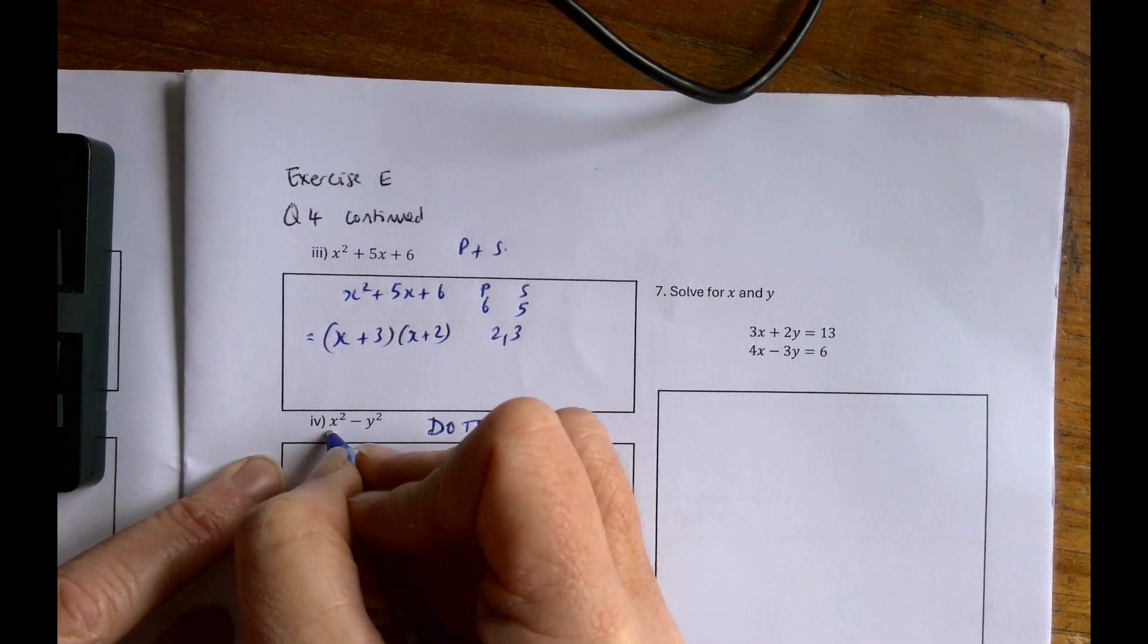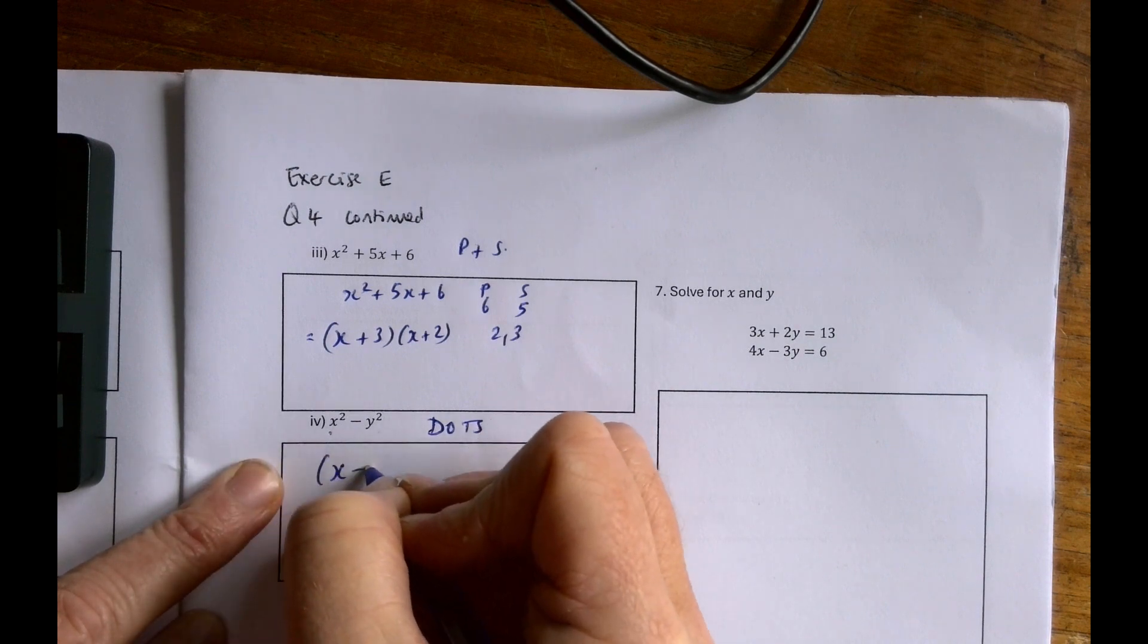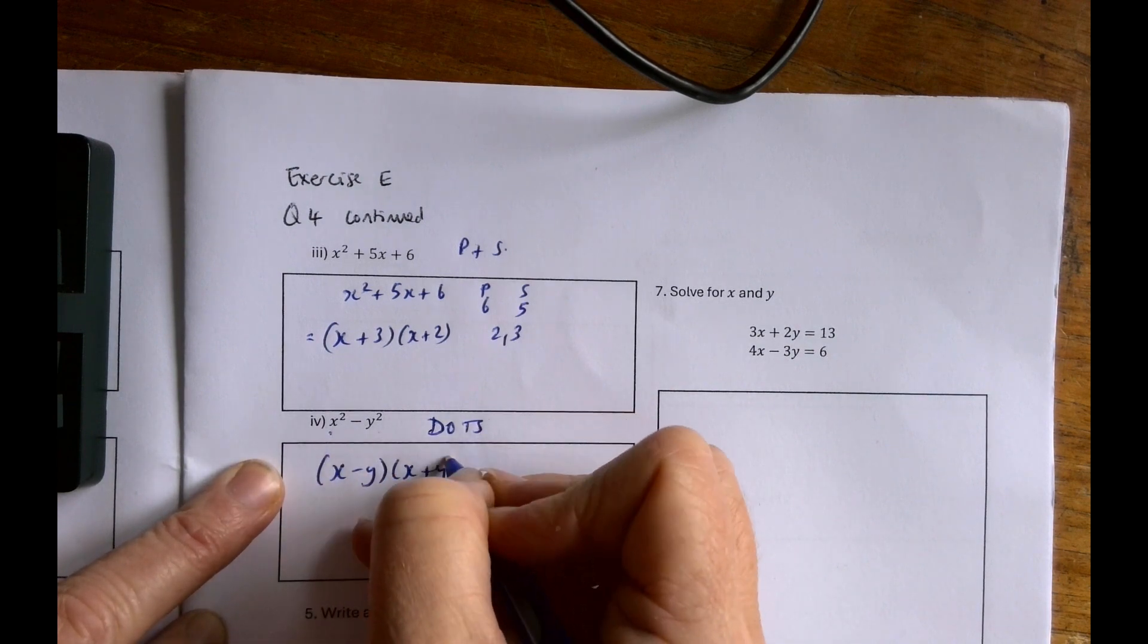What's this? This is a difference of two squares. I've got an x squared minus a y squared. The factors of that are x minus y, x plus y.